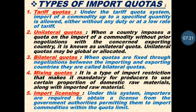Unilateral quota means: suppose there are two countries — India and Russia. India is the importer and Russia is the exporter. The Indian government imposes an import quota on Russian commodities without informing the Russian government. Without informing the exporting country, the importing country imposes a quota and a kind of tariff on the imports from that country.